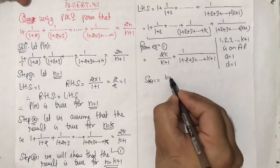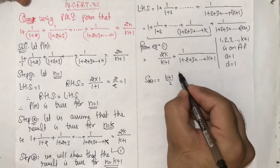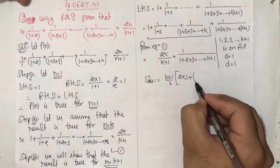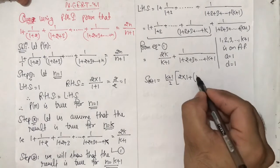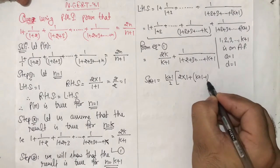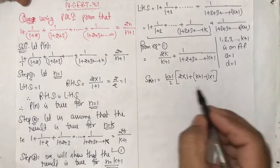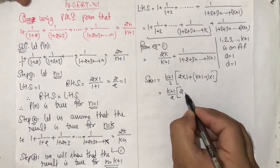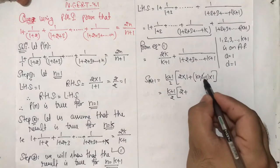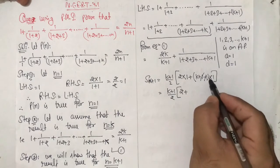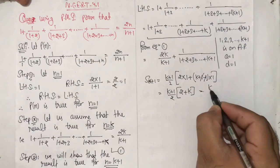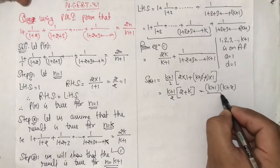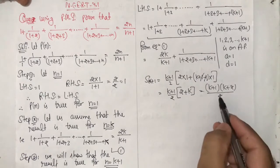That is (k plus 1) by 2 into (2 into 1 plus (k plus 1 minus 1) into 1), which gives (k plus 1) by 2 into (2 plus k). So the sum equals (k plus 1)(k plus 2) divided by 2.